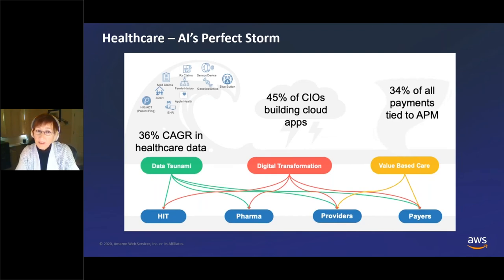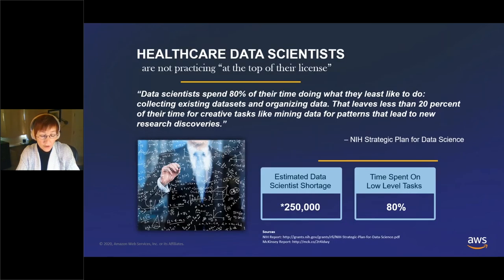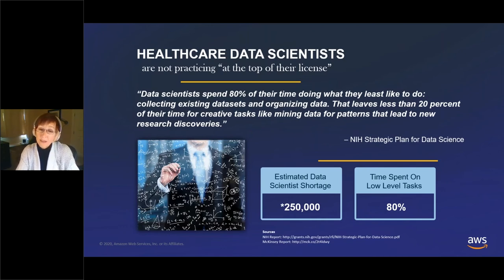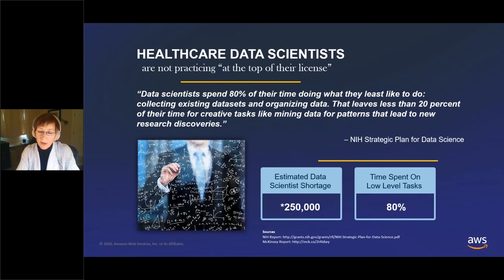So what does all that mean? In this gold rush, AI has created a bit of a problem: there aren't enough data scientists to go around. A McKinsey study from a few years ago said there's an estimated shortage of a quarter of a million data scientists.